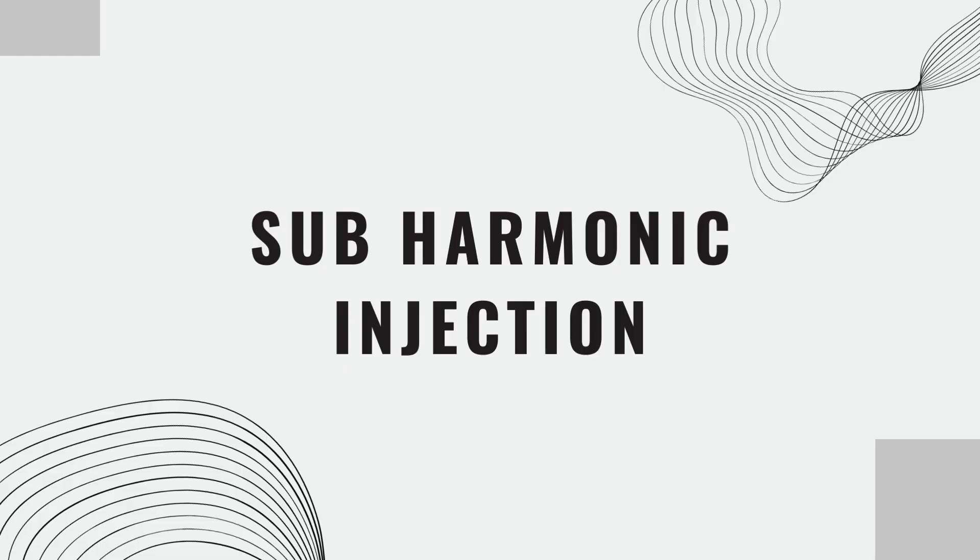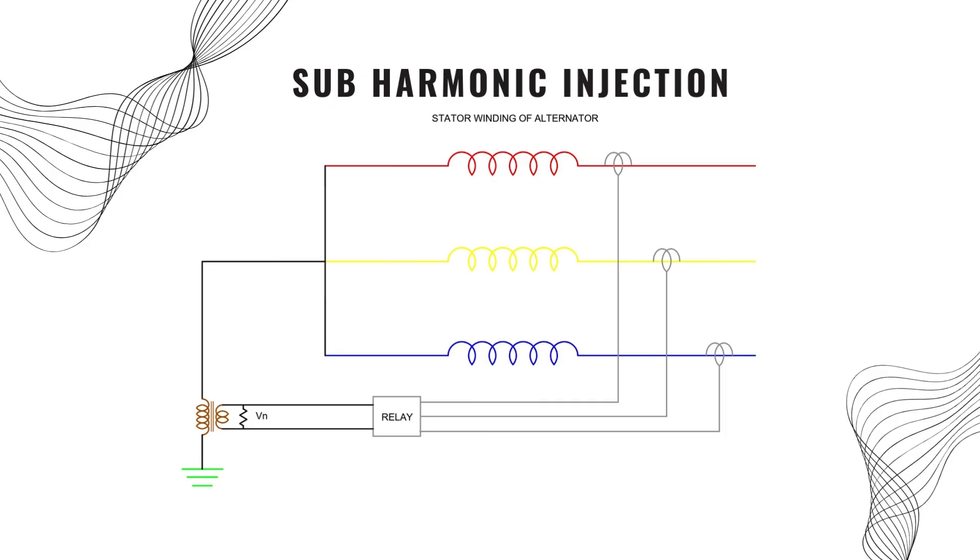Lastly, we will understand the sub-harmonic injection method. 100% earth fault can also be detected in this method. But it detects earth fault only when the generator is in idle condition.